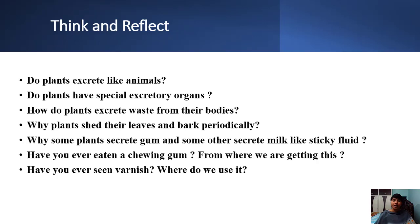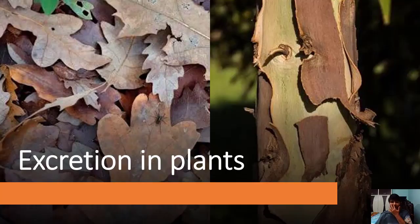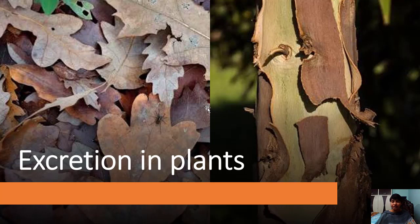So let us move on to the lesson — excretion in plants. What you are observing in the picture: dried or dead leaves and the bark which is shedding from the eucalyptus plant. Some plants remove their waste in the form of bark and also dead leaves. They transfer the waste produced inside the plant into aged leaves, and those aged leaves fall off from the plant — that is how they remove their waste.